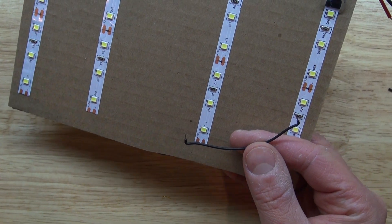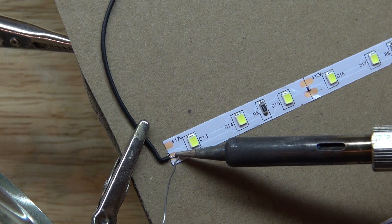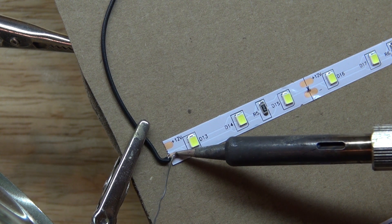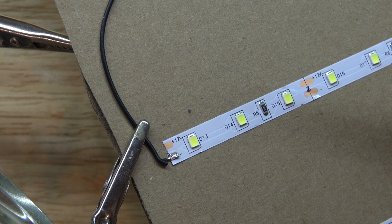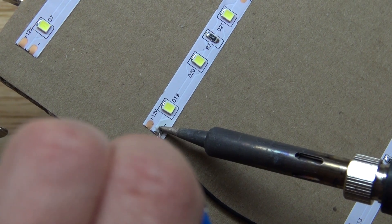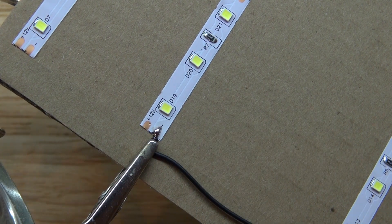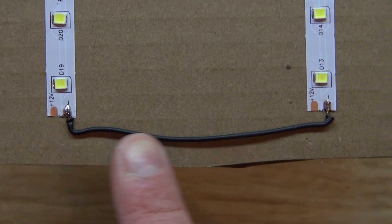Now it's time to connect all the strips together so it becomes one circuit. Attach the negative wire to the negative terminal. Solder the wire negative to negative. So it looks just like this.